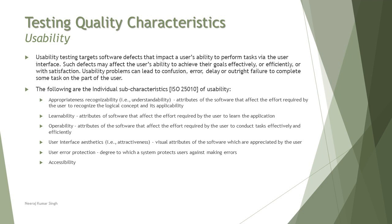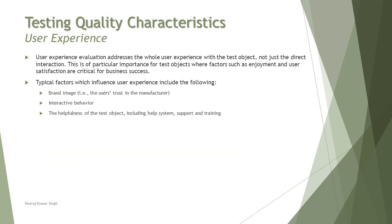Learnability refers to attributes of the software that affect the effort required by the user to learn the application. Operability refers to attributes affecting the effort required to conduct a task — learning what a product does is different from actually operating it. User interface covers the visual attributes of the software appreciated by users. User error protection refers to the degree to which the system protects users against making errors, such as through informational messages, pop-ups, or hover text.